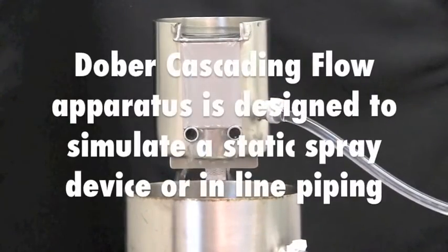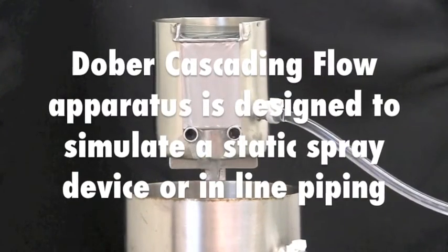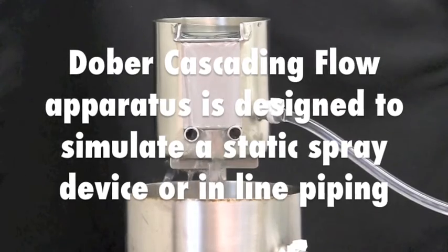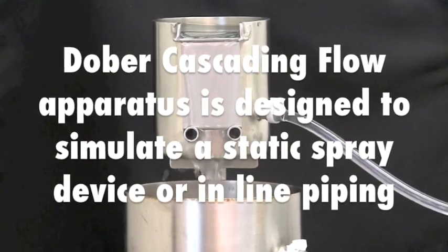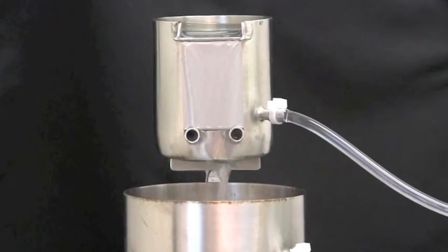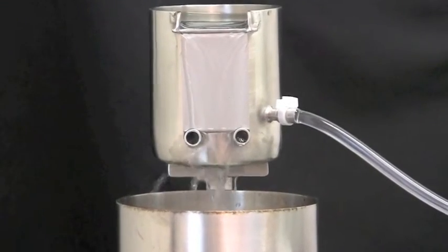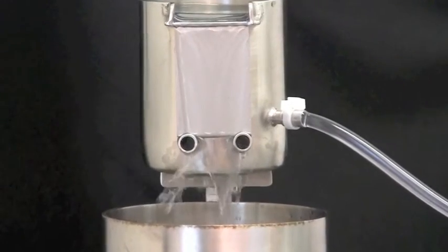The Dober cascading flow apparatus is designed to simulate the gentle flow of cleaning fluids across the surface, such as might be encountered with a static spray device or through in-line piping. Here again, the soil application is critical to the development of valid TACT parameters.